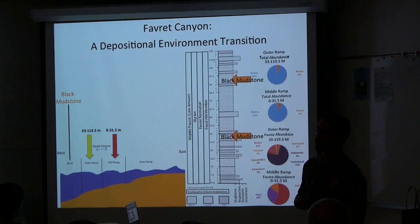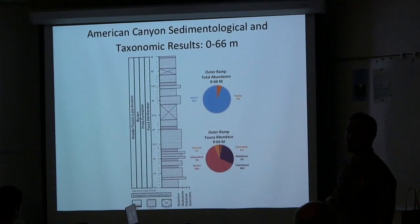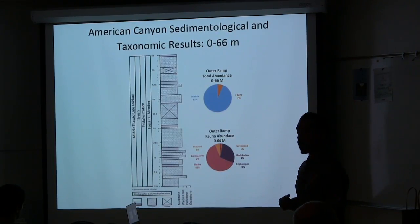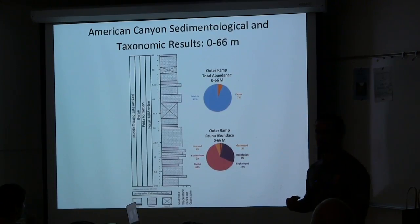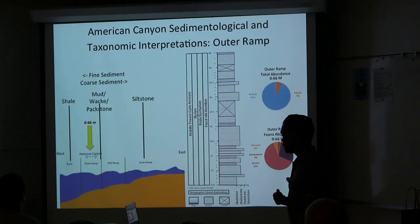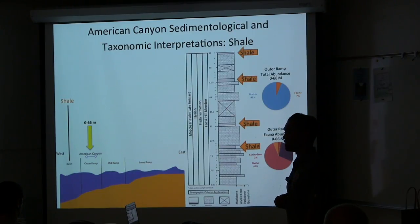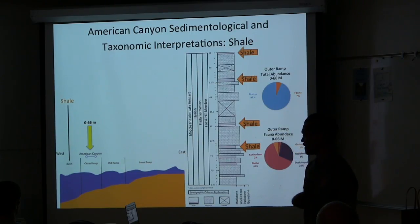Fabric Canyon transitioning from a middle ramp to an outer ramp suggests a transgressive sea level change, and smaller transgressive events are interpreted via the black mudstone. This interpretation supports that fauna were tracking depositional environment and are not absent from the rock record. American Canyon is composed of thick mudstone and wackestone beds interbedded with thin wackestone, packstone, and shell beds. American Canyon hosts 28% cephalopods and 62% bivalves. Combining lithology and fauna observations suggests American Canyon formed in an outer ramp. Shell horizons are evidence of relatively small-scale transgressive sea level change. Overall, American Canyon did not undergo a depositional environment change like Fabric Canyon.